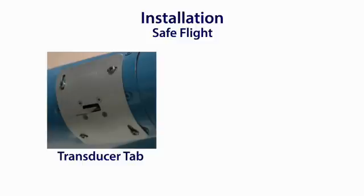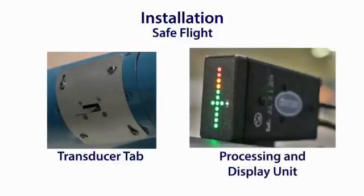The Safe Flight device utilizes a two-part system. There is a transducer tab that is installed on the leading edge of the wing and the processing and display unit that is placed in the cockpit in view of the pilot. The transducer tab needs to be positioned on the leading edge of the wing and needs to have a hole cut in the wing. This becomes difficult but not impossible on composite aircraft.